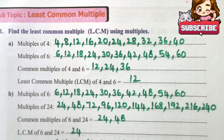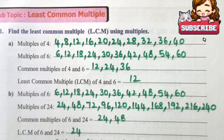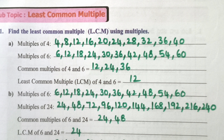Multiples of 6: 6, 12, 18, 24, 30, 36, 42, 48, 54, 60. Multiples of 24: 24, 48, 72, 96, 120, 144, 168, 192, 216, 240. Common multiples of 6 and 24 are 24 and 48. LCM of 6 and 24 is 24.